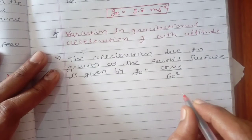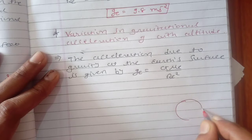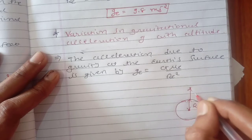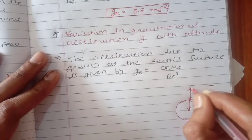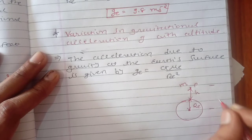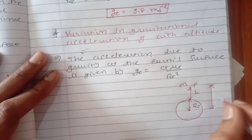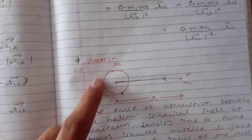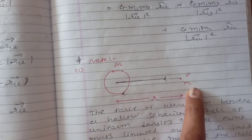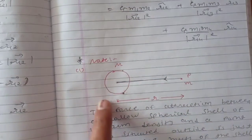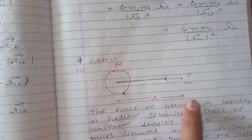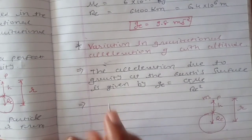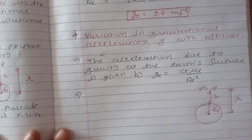As discussed in the second video of this chapter, R_e is the distance from the center of Earth to its surface — that is, the radius of Earth. Above the surface, at some height, there is a point P where a particle of small mass m is placed. The distance between Earth and this particle is small r. As we studied earlier, for a spherical body, the total mass is concentrated at its center, so the distance is measured from the center of Earth to the particle.